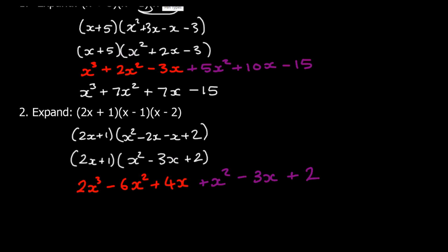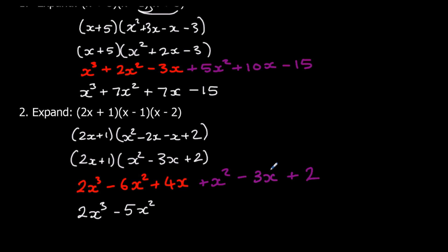Now we expand these two brackets — 2x times everything, and then 1 times everything. 2x times x squared is 2x cubed. 2x times negative 3x is negative 6x squared. And 2x times 2 is 4x.